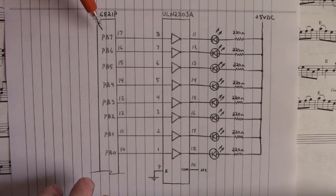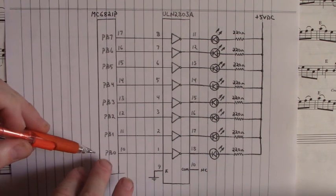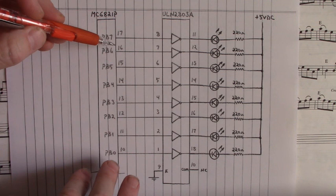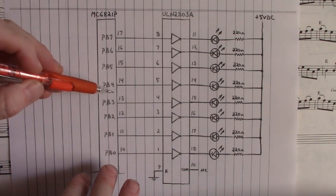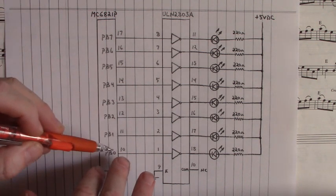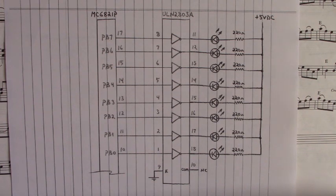Now port B7 through port B0 are on pins 17, 16, 15, 14, 13, 12, 11, and 10 of the MC6821P.